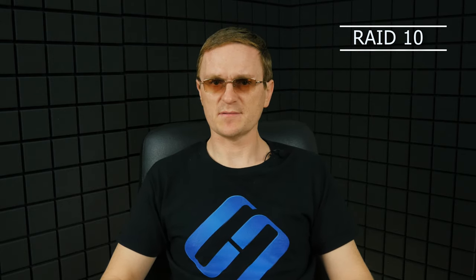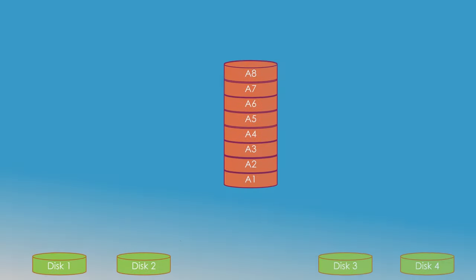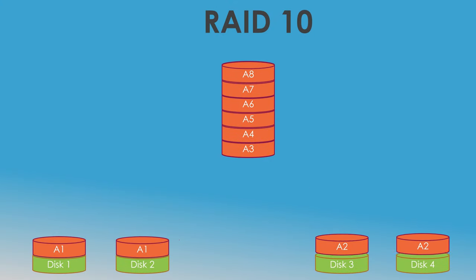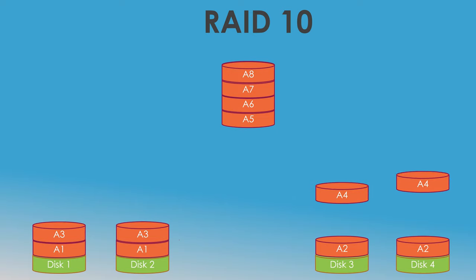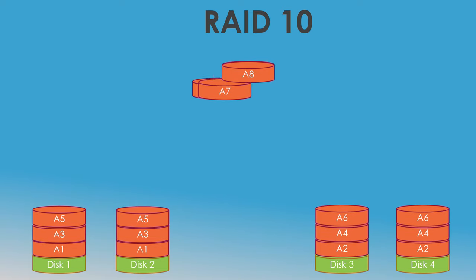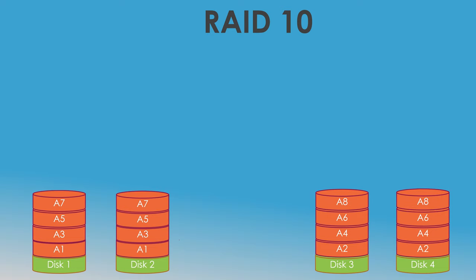RAID 10 is a combination of RAID 0 and RAID 1. Data is written in parallel to two drives, while copies of such data are written to the other two drives. Such an approach offers a performance boost and improved security for data storage. To build this type of RAID, you need at least four disks. In the end, you'll get double read-and-write speed compared to single-disk figures, but only two disks out of four are actually available for storing data. Even if two disks fail at the same time, your information will not be lost.